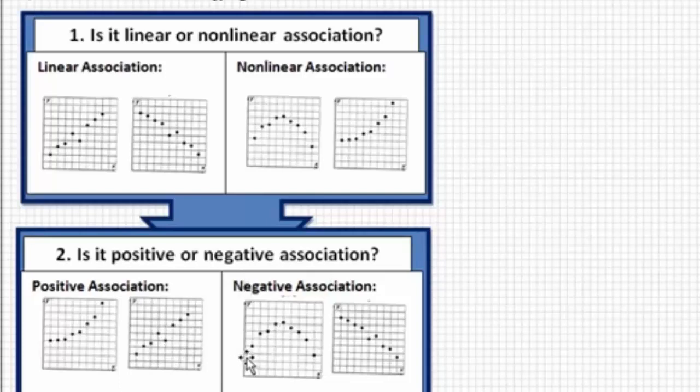The negative association here, because we see that it goes downward as we read the graph from left to right, we have a nonlinear negative association. Here it's a linear association, but it is going downward as we read it from left to right, so it's a linear negative association.